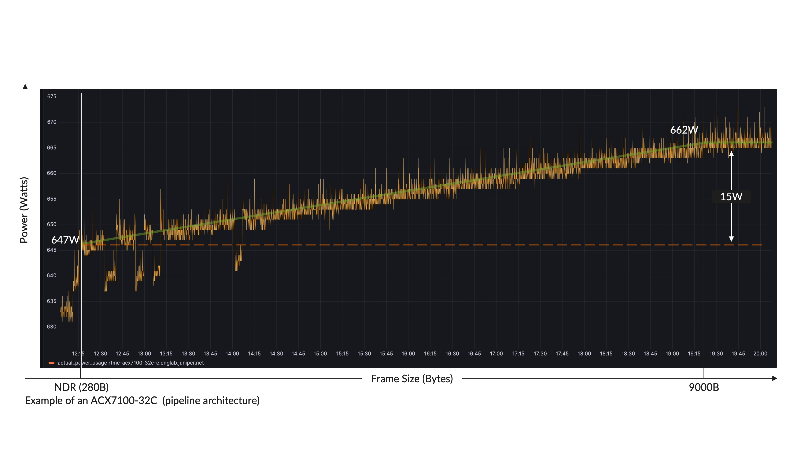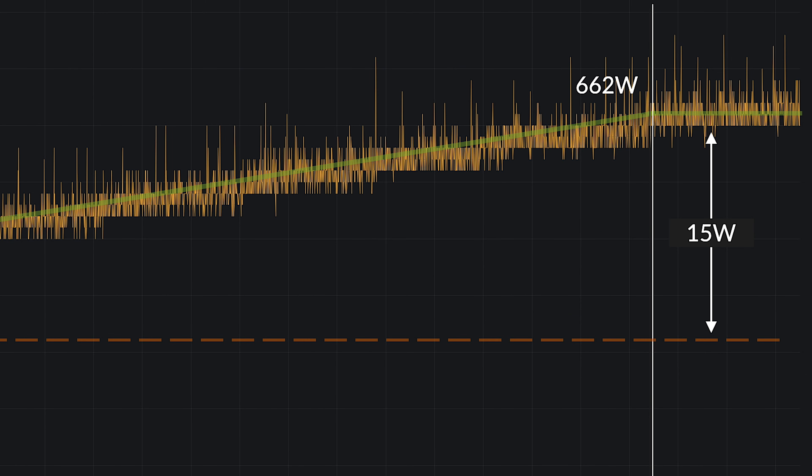That's what we want to demonstrate with this experiment. We keep a constant PPS — like 10 million packets per second — and increment the packet size from non-drop rate to line rate. If we keep the PPS constant, the power usage difference from NDR to line rate is only 15 watts, much less than the 95 watts measured in the previous test. We can directly conclude that traffic influence on power is more dependent on the number of packets handled per second than the bandwidth in bits per second.